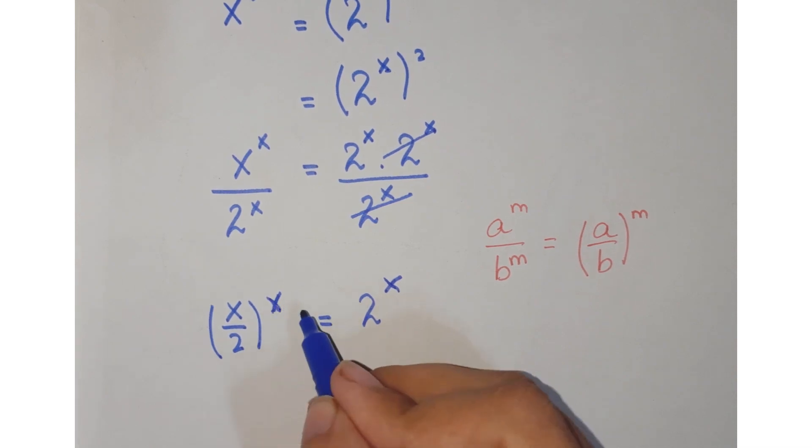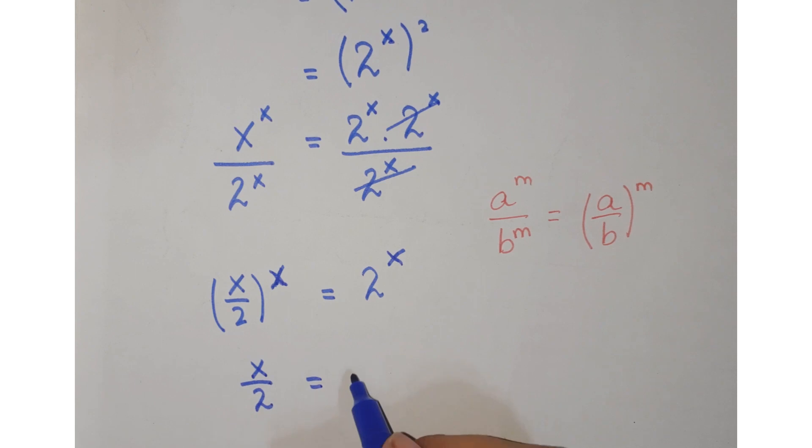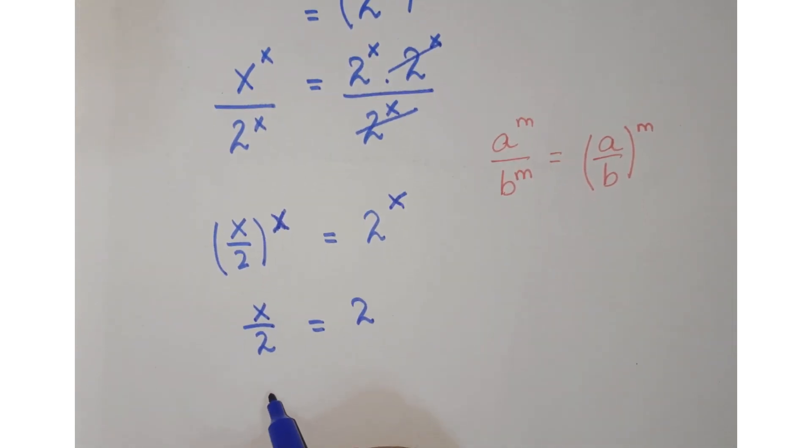Since they are the same exponents on both sides, we can just equate their bases. So x upon 2 is equal to 2, or you can say that x is equal to 4, and this is our required answer.